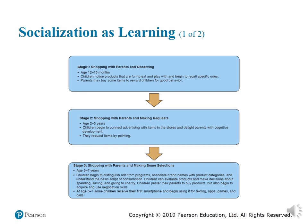The figure explains five stages of children's development as consumers. Stage one: shopping with parents and observing, ages 12 to 15 months. Children notice products that are fun to eat and play with and begin to recall specific ones. Parents may buy some items to reward children for good behavior. Stage two, age two to three: shopping with parents and making requests. Children begin to connect advertising with items in stores. They request items because they are two to three years old.